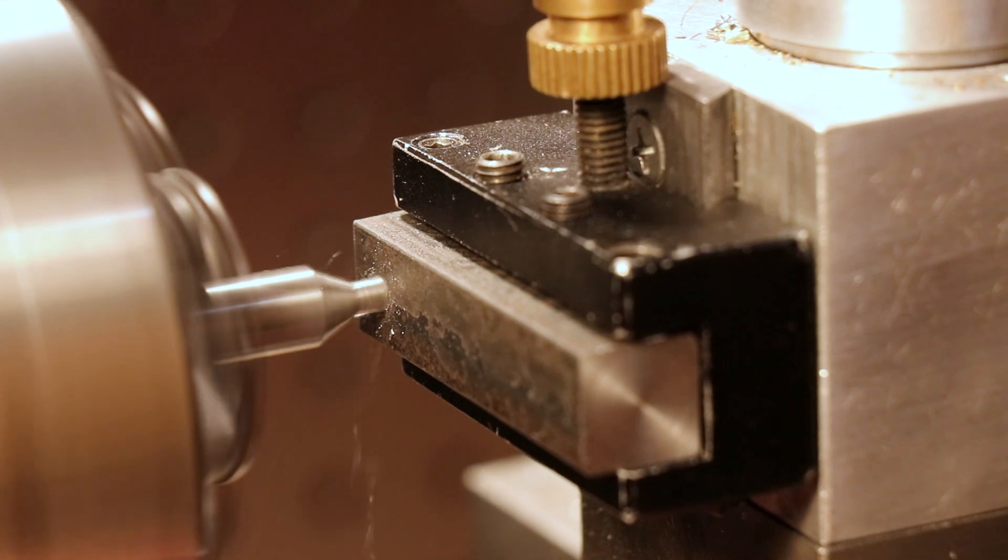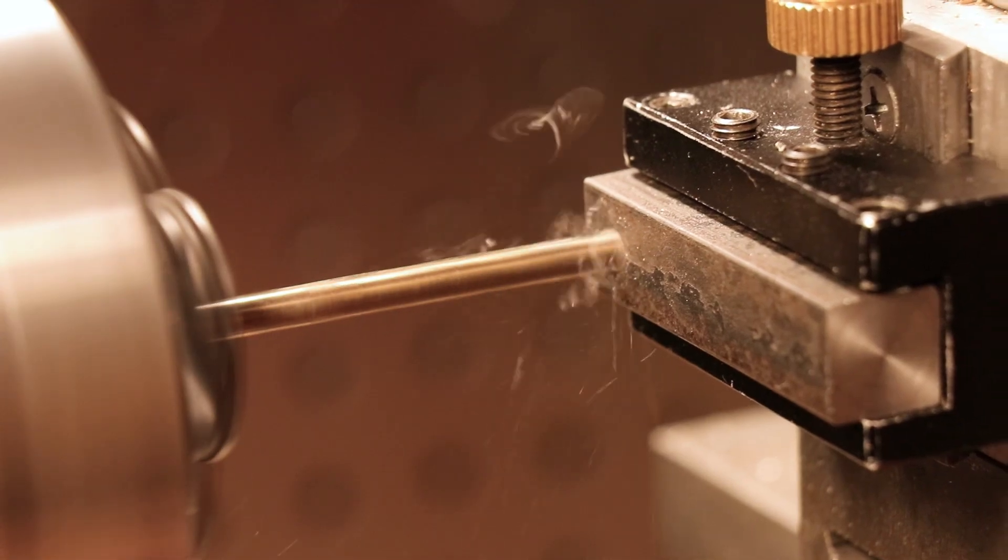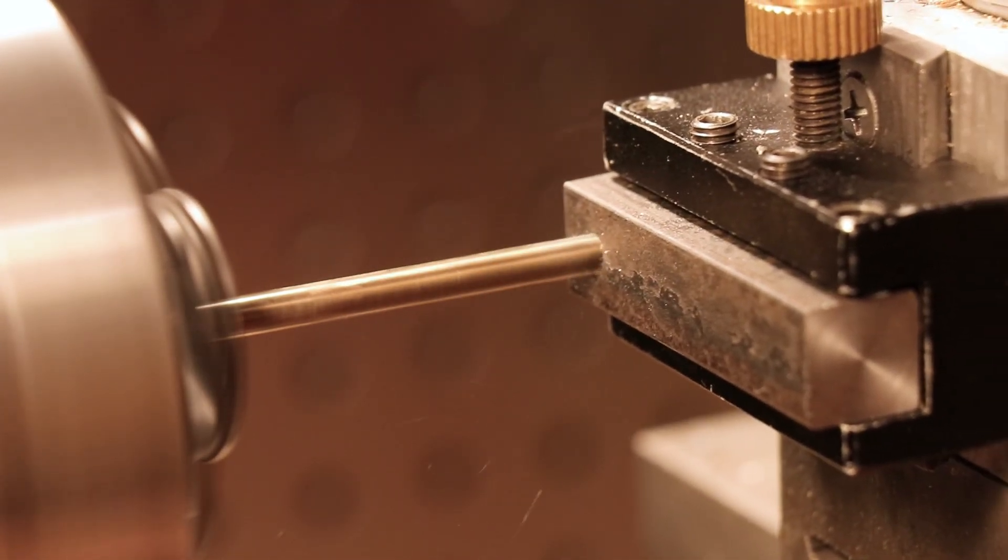A hole is then drilled the same diameter as the shank of the drill. Next, we can drill a hole perpendicular to it to accept a grub screw, and then tap some threads into it.